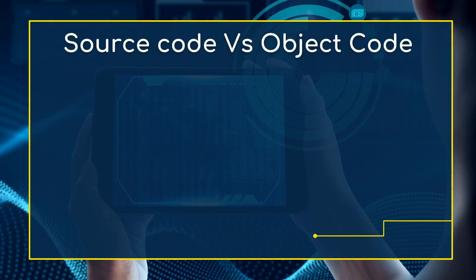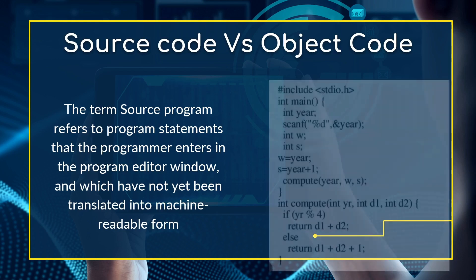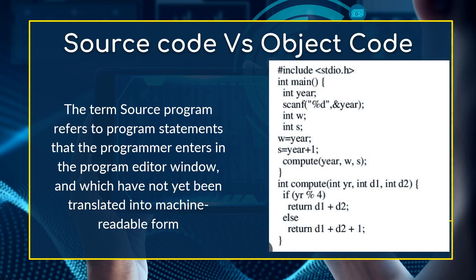Another very important term is source code and object code. Source code simply refers to program statements that the programmer enters in the editor window which have not yet been translated into machine language. The person who writes programs is known as a programmer. These initial statements they write are known as source codes because they are not yet translated into a language understood by the computer.